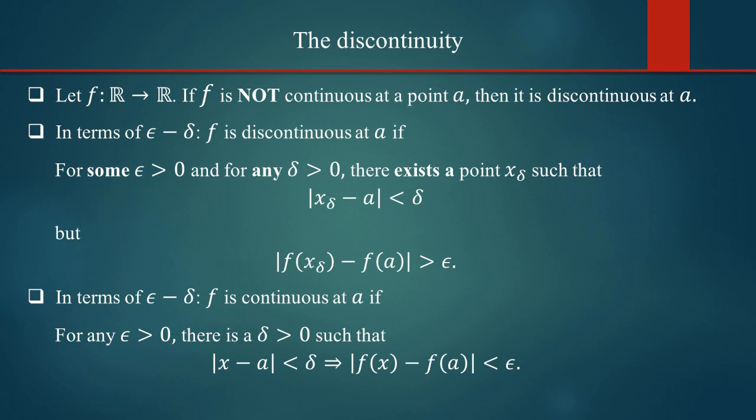In terms of epsilon-delta, f is discontinuous at point a if for some epsilon greater than zero and for every delta greater than zero, there is a point x_delta such that |x_delta − a| < delta but |f(x_delta) − f(a)| > epsilon. This definition is easily obtained by negating the definition of continuity at a point, and the definition of continuity is included here for reference.